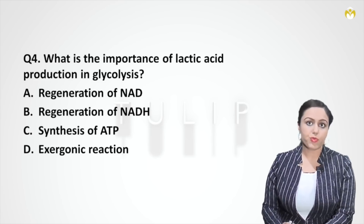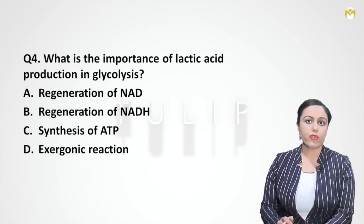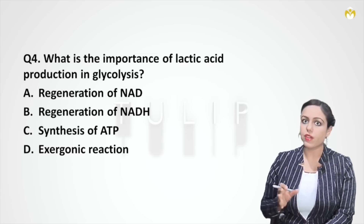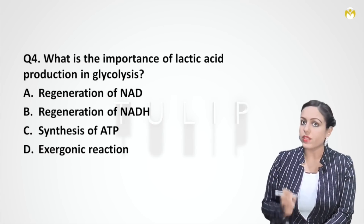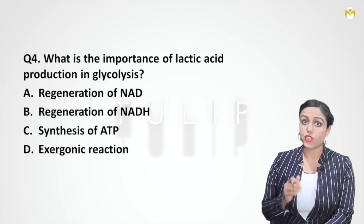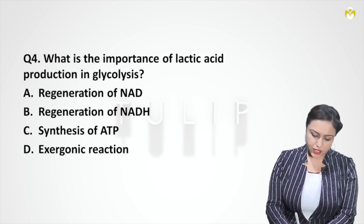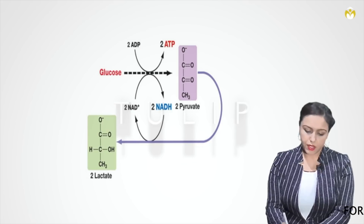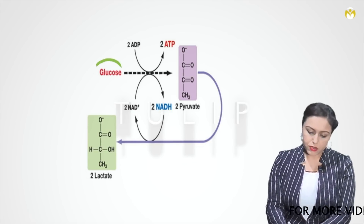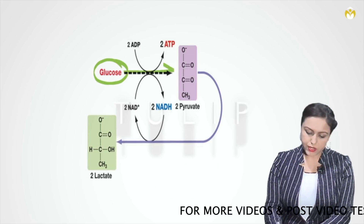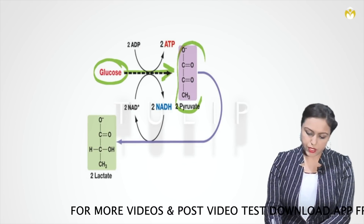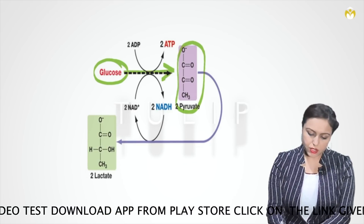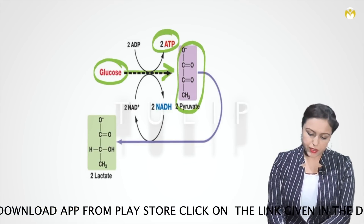Question four: what is the importance of lactic acid production in glycolysis? This is a frequently asked question. The concept of NAD/NADH at this one step of anaerobic glycolysis is very important. Glucose gets converted to two pyruvate molecules, giving a net gain of two ATPs plus two NADH.